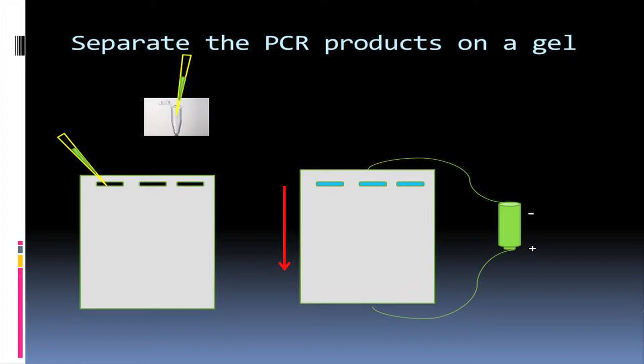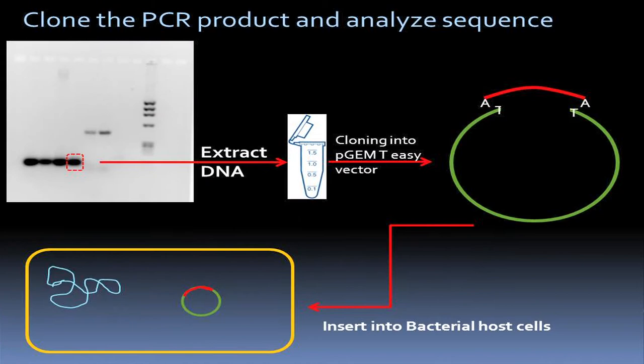After the PCR is done, we add loading dye into our sample. The sample is then put into wells on a gel, and that gel is hooked up to an electrophoresis machine, which sends electrical currents into it and causes the DNA to run down the gel. We'll have DNA bands, and the size of the bands are measured with a ladder. Once we find the right size we're looking for, we cut it out and put it into a tube to extract the DNA from the gel piece. That DNA is then put into a vector and cloned, and that vector is inserted into bacteria so that we can grow several copies of the gene we want.